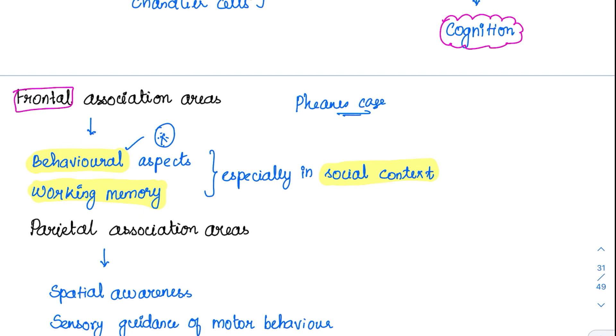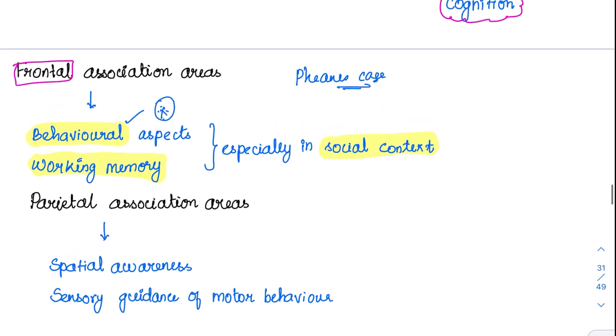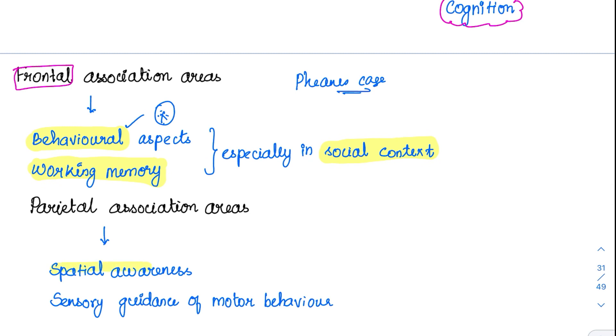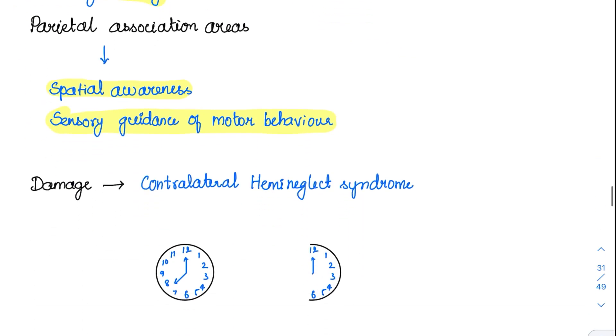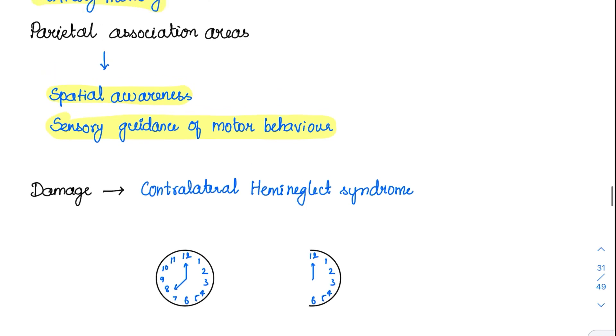The parietal association area, they are involved in spatial awareness. They are involved in spatial awareness, and they are very, very essential for the sensory guidance of motor behavior. So what will happen if there is no spatial awareness? It brings us to the contralateral hemi-neglect syndrome. We are not giving attention to one half of the body.